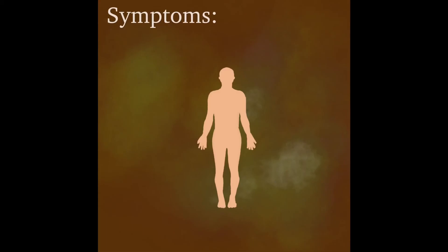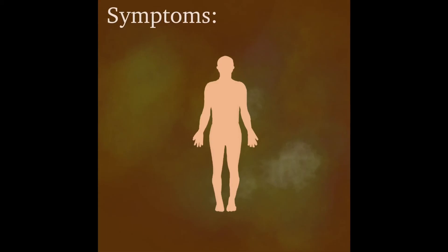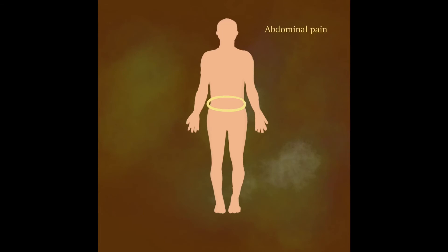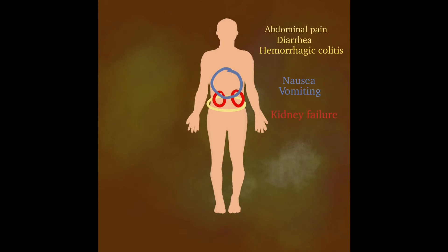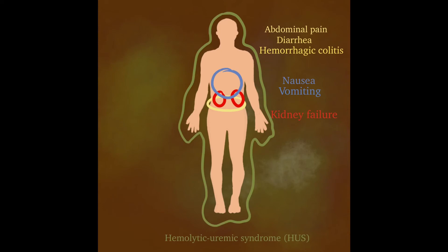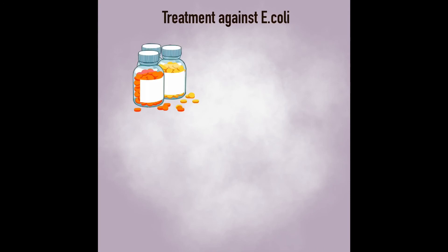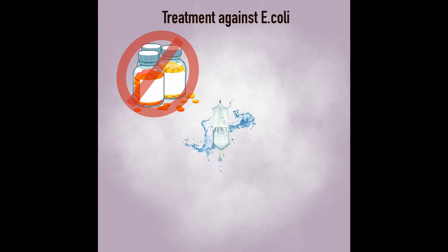Now that we know how E. coli functions inside our bodies, how can we know we could be infected? The symptoms are abdominal pain, diarrhea, some strains cause hemorrhagic colitis, nausea, and in some cases vomiting. In extreme cases, kidney failure can develop. In the worst case scenario, you can develop hemolytic uremic syndrome, also called HUS. The treatment against E. coli varies, and the usage of antibiotics is not recommended due to their high resistance. Some antibiotics E. coli is resistant to are erythromycin, amoxicillin, and tetracycline.